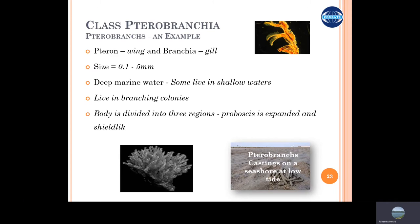Pterobranchs are the other type of hemichordates which are sessile in nature. They do not swim, do not burrow — they basically get attached to the substrate and then divide by budding, making a colony.